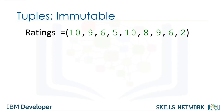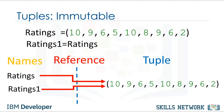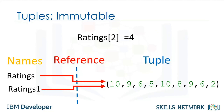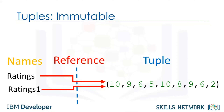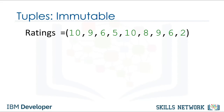Tuples are immutable, which means we can't change them. Each variable does not contain a tuple but references the same immutable tuple object. See the objects and classes module for more about objects. Because tuples are immutable, we can't change the element at index 2. Therefore, ratings1 will not be affected by a change in ratings. We can assign a different tuple to the ratings variable — the variable ratings now references another tuple. As a consequence of immutability, if we would like to manipulate a tuple, we must create a new tuple instead.